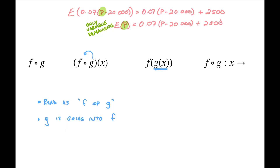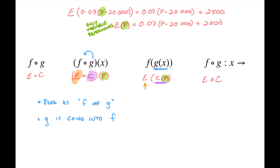Mapping this back to our example, we can write E of C, or E of C of P, where P is pharmaceutical sales, C is the commission calculation, and the whole thing gives us our earnings. The key idea to drive home: the second function goes inside the first one.